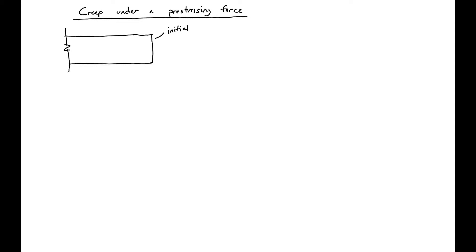Now we're going to look at the creep under a pre-stressing force and the way to account for it using the effective modulus method. We have a specimen with a pre-stressing strand running down the center of it. We'll put the pre-stressing strand in initial tension and call this Fp0 or Fs0. Because it's an initial tension, it's going to have a negative sign. This tension is then released, putting an external force on our specimen, giving us a final displacement.